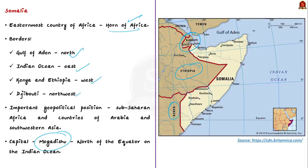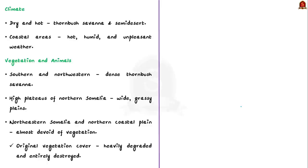Somalia is a country of geographic extremes. The climate is mainly dry and hot, but the coastal areas experience hot, humid, and unpleasant weather throughout the year, whereas the interior experiences a dry and hot climate. Most of the country is extremely flat except for the mountainous coastal zones in the northern parts and the river valleys. Landscapes include thornbush, savanna, and semi-desert. Southern and northwestern Somalia have relatively dense thornbush savanna, while the high plateaus of northern Somalia have wide grassy plains.